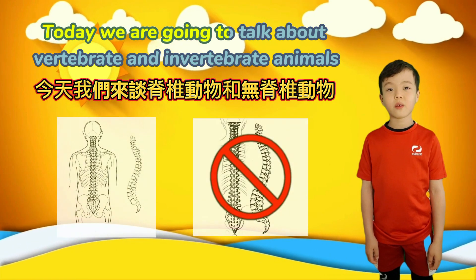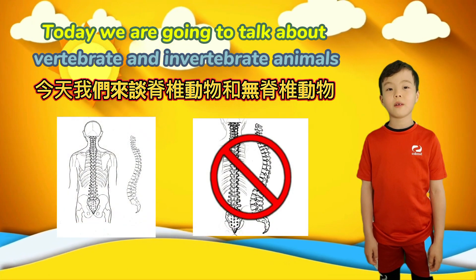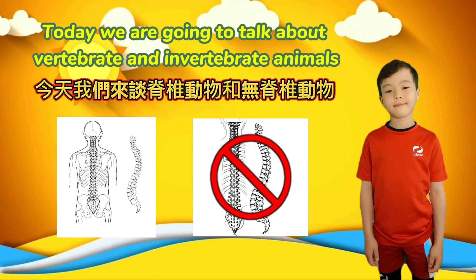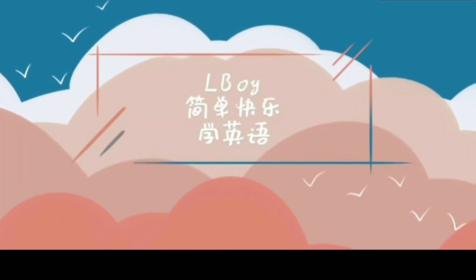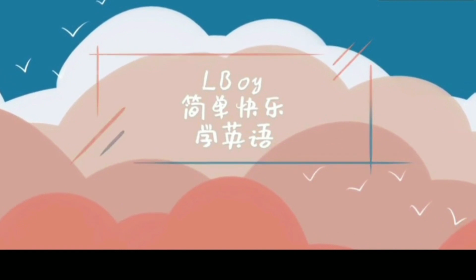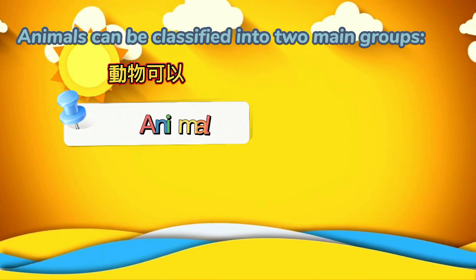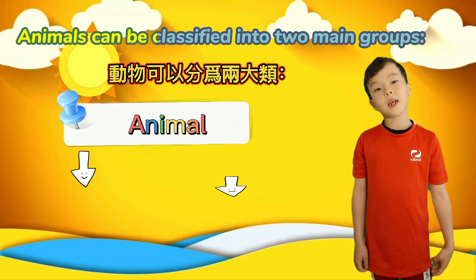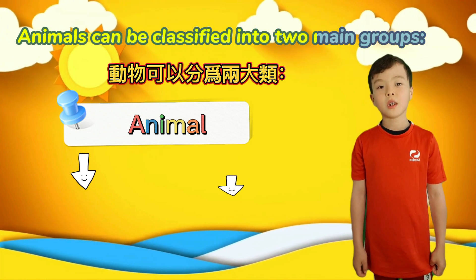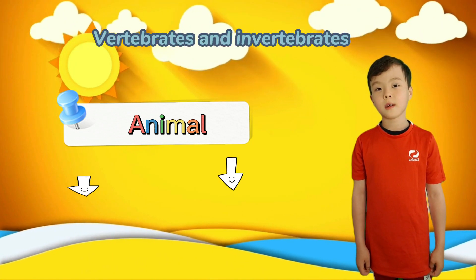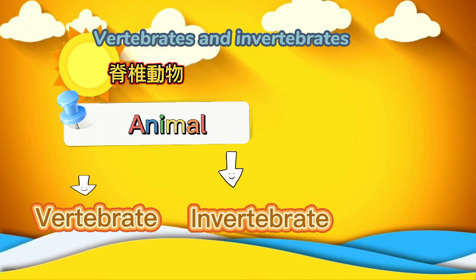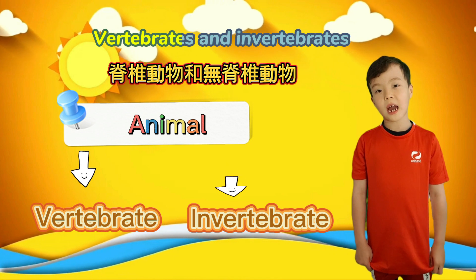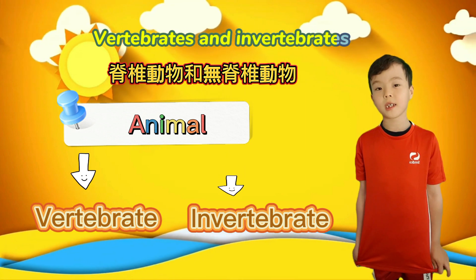Today, we are going to talk about vertebrate and invertebrate animals. Animals can be classified into two main groups: vertebrates and invertebrates.